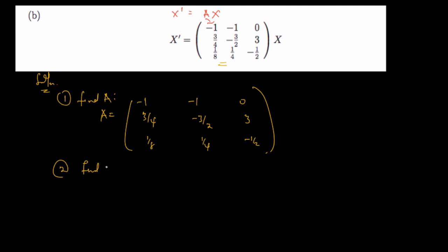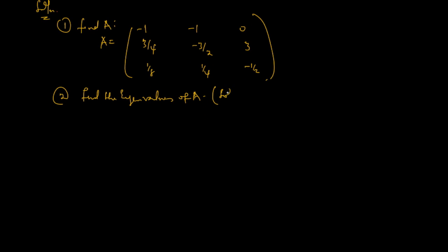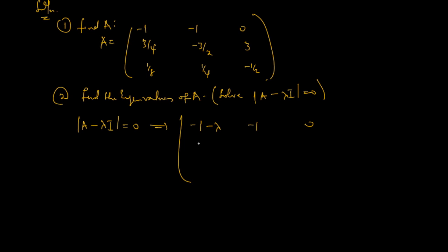Now step two: find the eigenvalues of A. Finding the eigenvalues of A simply implies solving det(A − λI) = 0. So we have A minus λI equals zero, which means subtracting λ from all the diagonal elements. The determinant gives us: negative one minus λ, negative one, zero; three over four, negative three over two minus λ, three; one over eight, one over four, negative one half minus λ. We set this determinant equal to zero and solve.